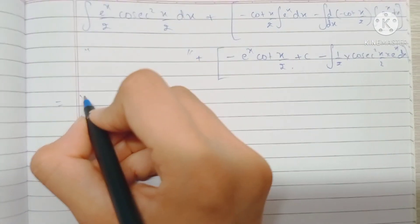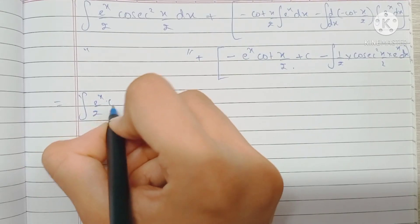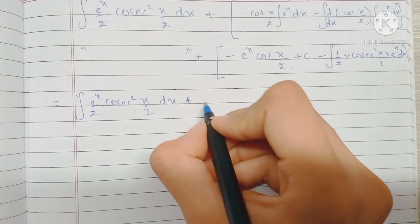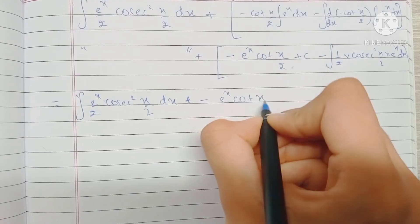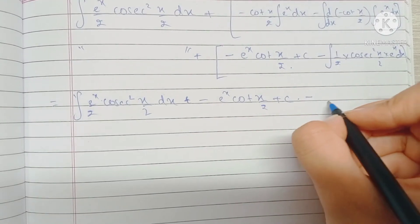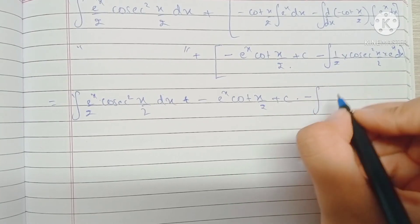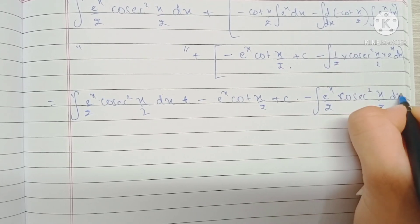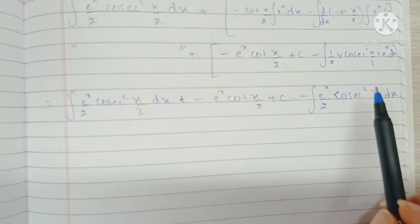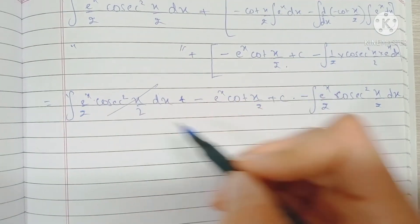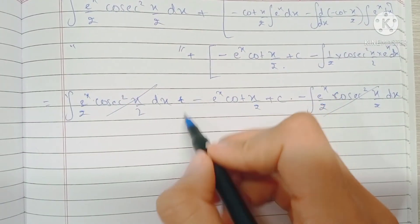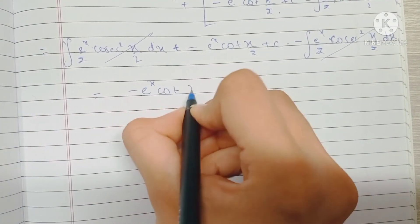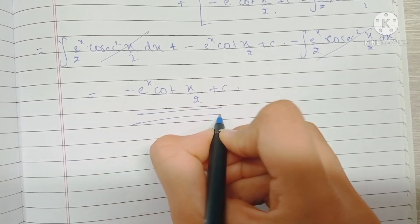This gives us the integral of (e^x / 2)cosec²(x/2) dx. Opening the bracket, we have minus e^x·cot(x/2) plus C, minus the integral of e^x times (1/2)cosec²(x/2) dx. As you can notice, we have the exact same integrals with opposite signs, so they cancel out. Since no integral term remains, we are left with our final answer: minus e^x·cot(x/2) plus C.